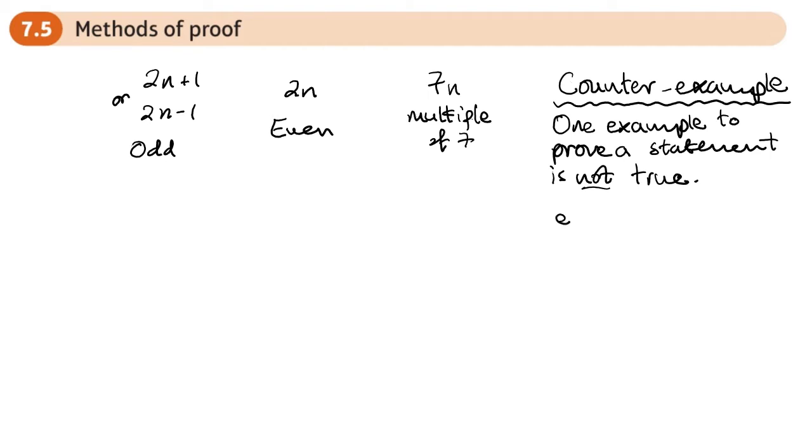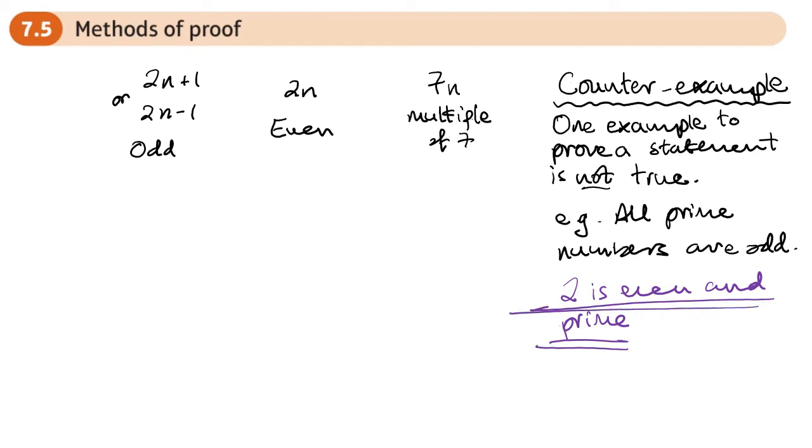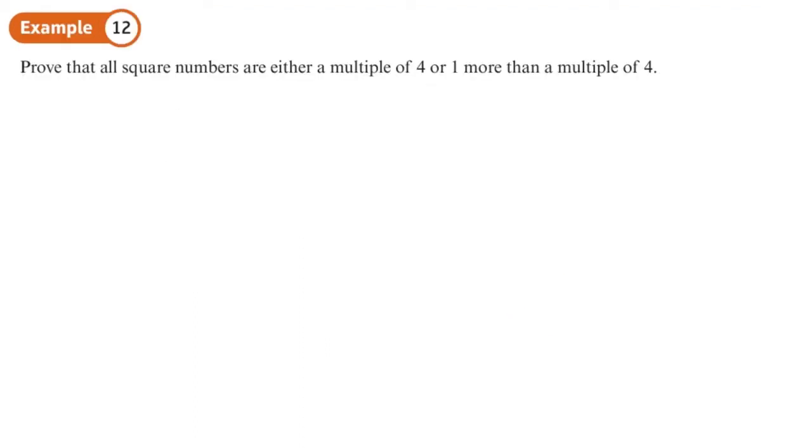Here's an example. All prime numbers are odd. Is that true? No, because I can prove a counter example: 2. 2 is even and prime. That's my counter example. I need one example to show that the statement isn't true.